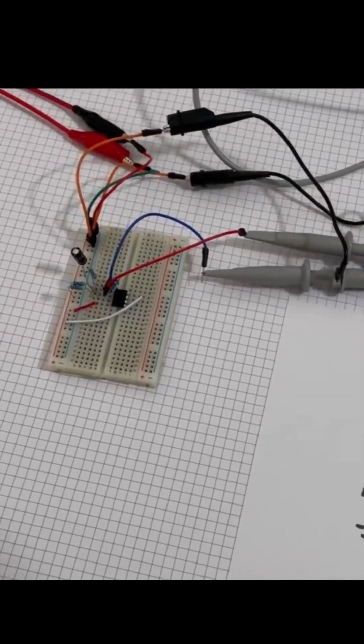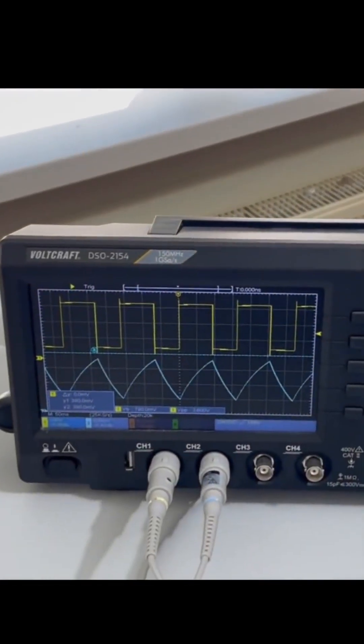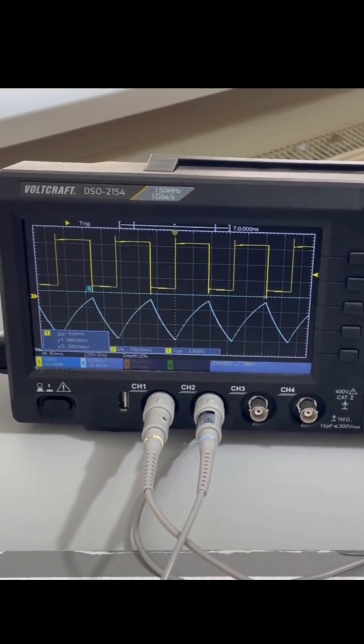PWM. We can have it make a square wave signal, and even make it do PWM if we use the second op-amp from the IC.